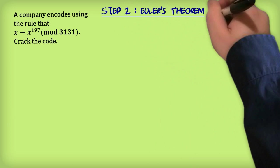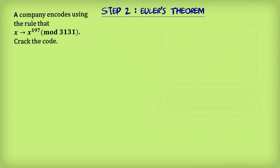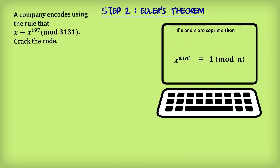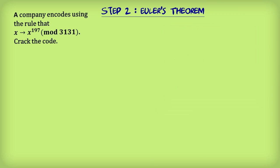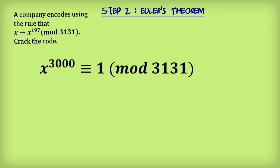Step 2: Euler's Theorem. This tells us that if we raise x to the power of the Euler-Totient function of n, we'll end up with a number equivalent to 1 mod n. So in our case, in mod 3131, this tells us that x, whatever x is, to the power of 3000 is equivalent to 1.